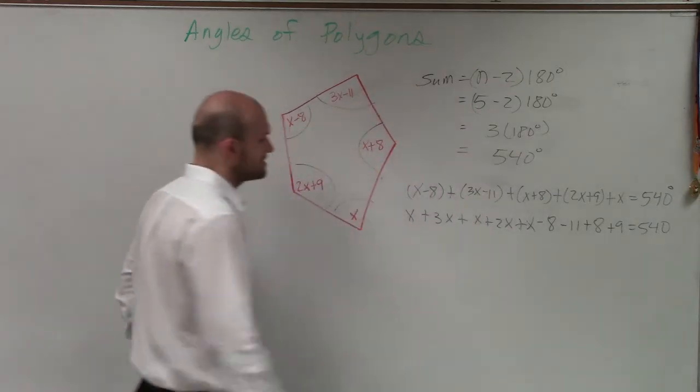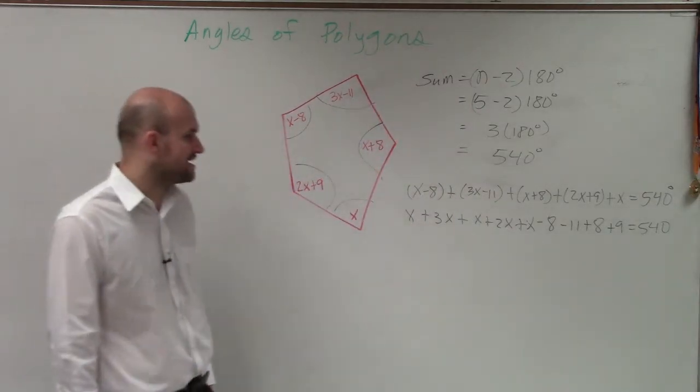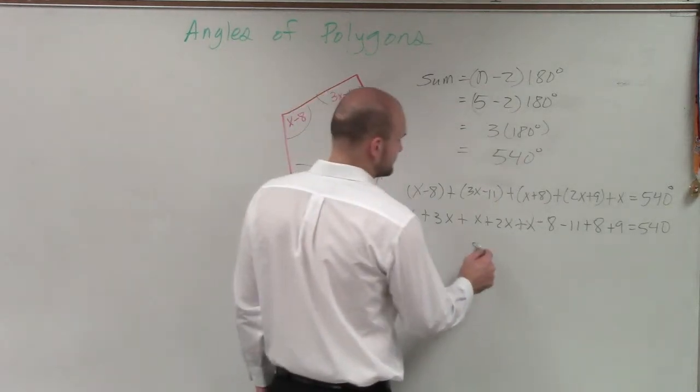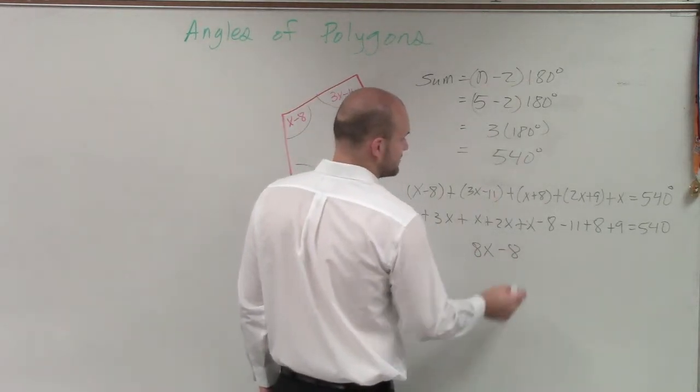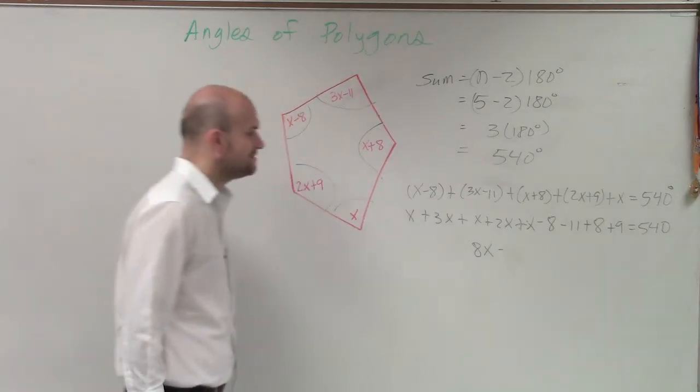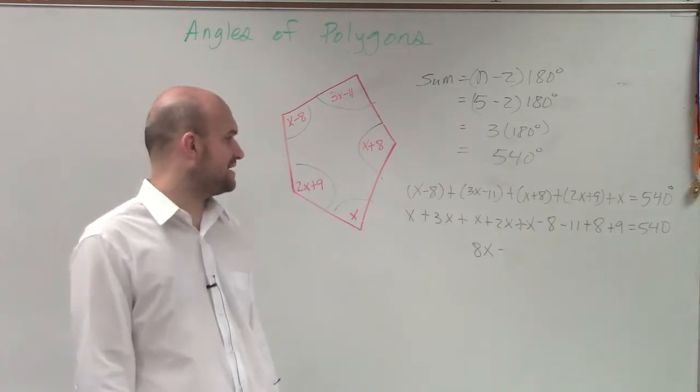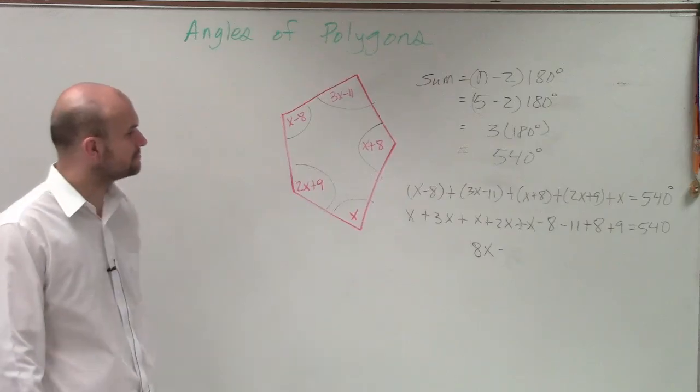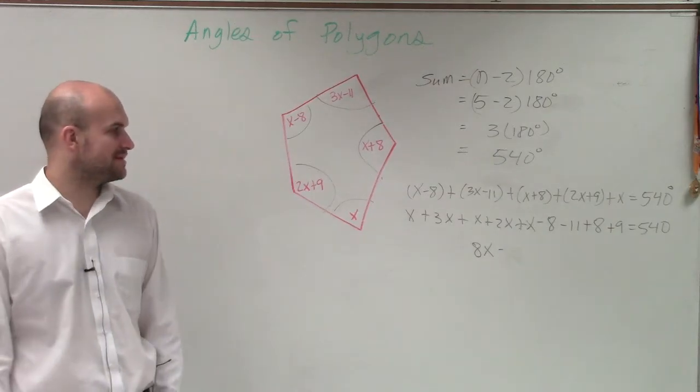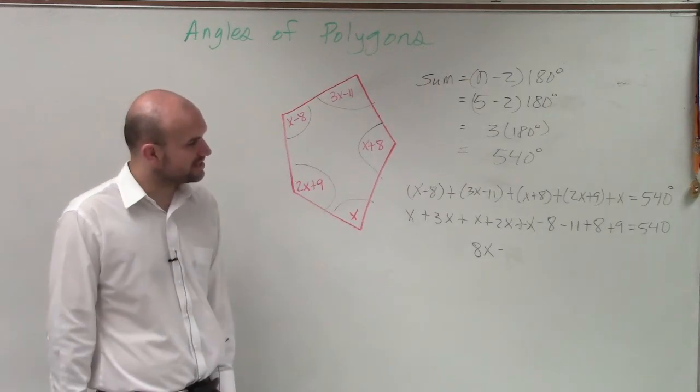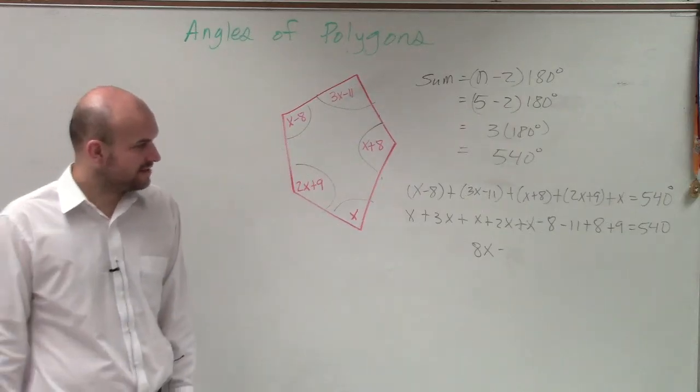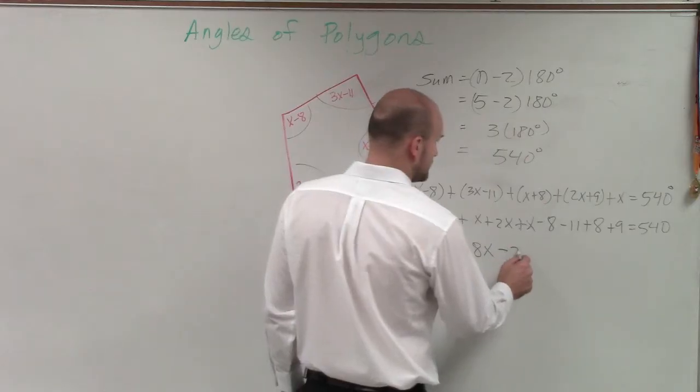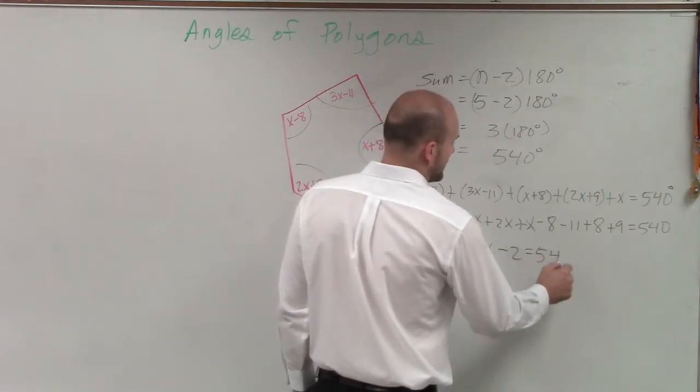So x plus 3x is 4x plus x is 5x plus 2x is 7x plus x is 8x. Then minus 8 minus 11 is negative 19 plus 8 is negative 11 and then plus 9 is going to be negative 2 equals 540.